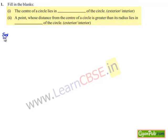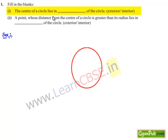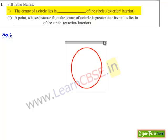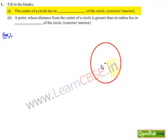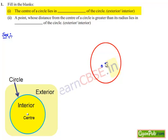Moving on to the solution for the first bit. We know that a circle is a collection of all points in a plane which are at a fixed distance from a fixed point in a plane. Here, the fixed point is known as the center and the fixed distance is known as the radius. Therefore, the center of the circle always lies in the interior of the circle.